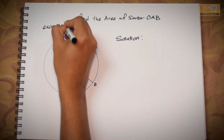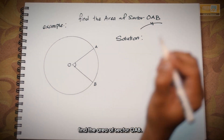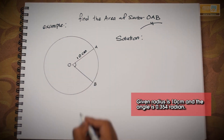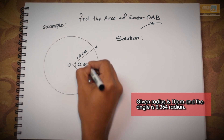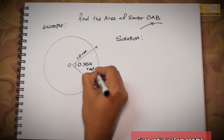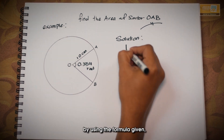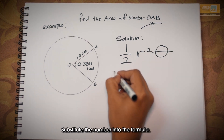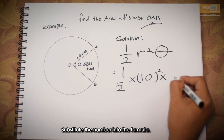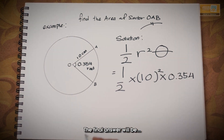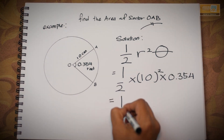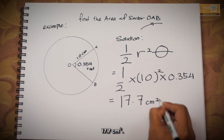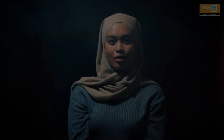For example, find the area of sector OAB. Given radius is 10 cm and the angle is 0.354 radians. The solution is, by using the formula given, substitute the numbers into the formula. The final answer will be 17.7 cm squared.